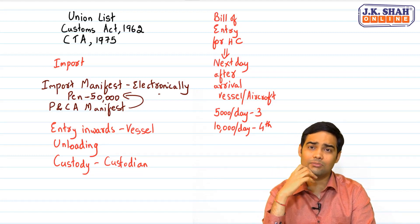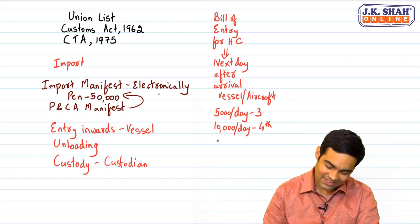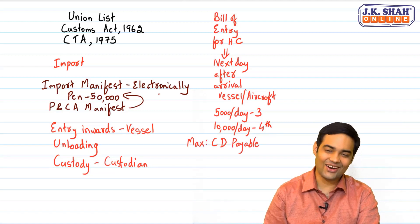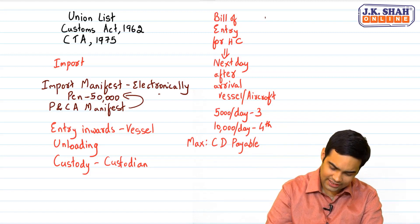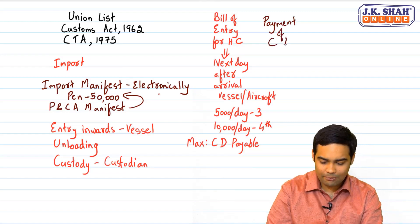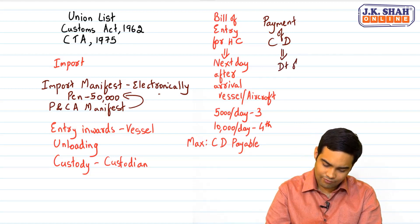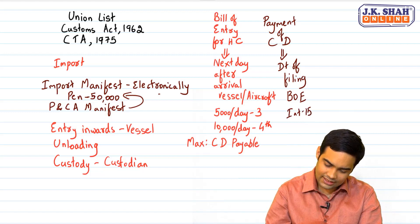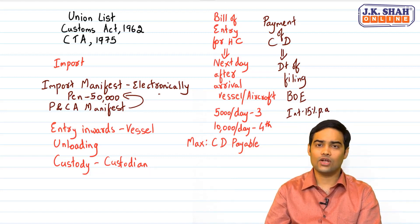The late filing penalty cannot exceed the custom duty payable — the law was amended to set this maximum. While filing the bill of entry, you are also required to make payment of custom duty on the date of filing. For delayed payment of custom duty, interest at 15% per annum is applicable throughout customs whenever you have to pay interest to the government.